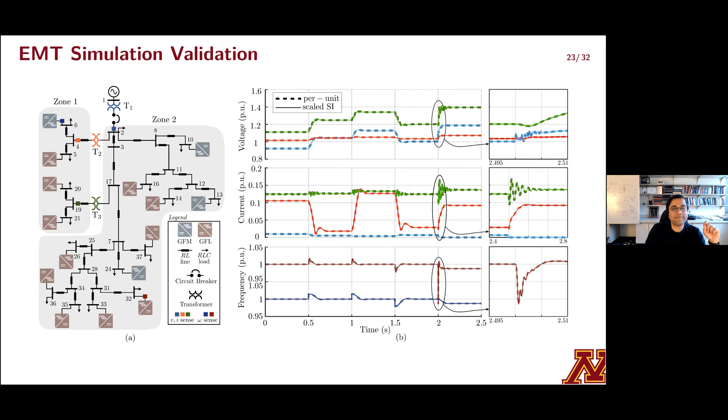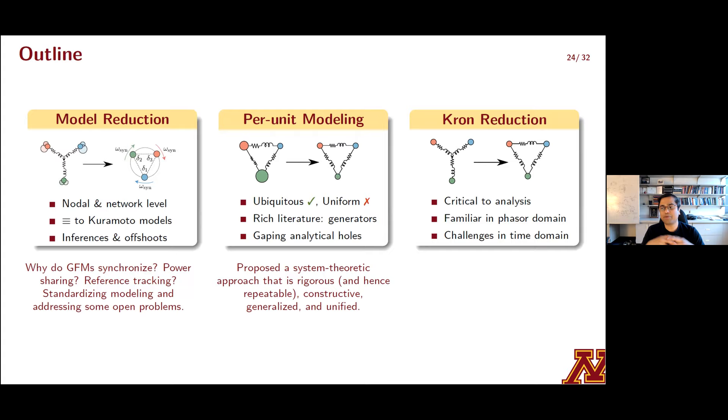So I'll close out this section of the talk by pointing out what we've learned. So we've looked at a procedure for per unit modeling that's rigorous. It's grounded in a system theoretic construct. We've seen it as constructive, by which I mean that you can scale from small units to big networks with ease. And then we've seen that it generalizes analysis for linear and non-linear systems across time scales in a very unified manner. Lots of avenues for future work that cover implementation. But we won't jump into that. What we will jump into, though, is the final frontier for this presentation. We're going to look at a neat little result on time domain Krone reduction.